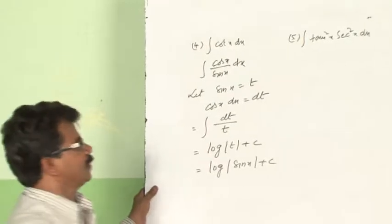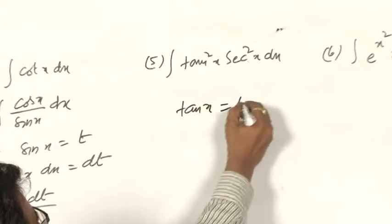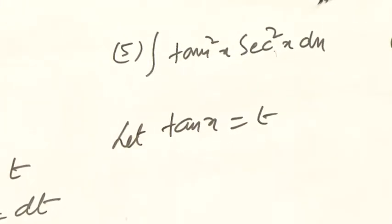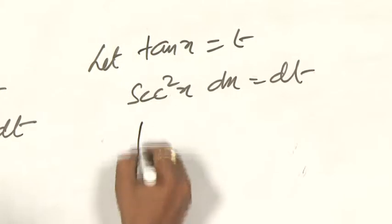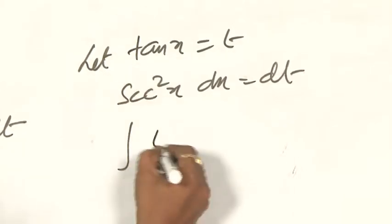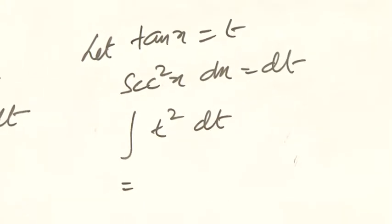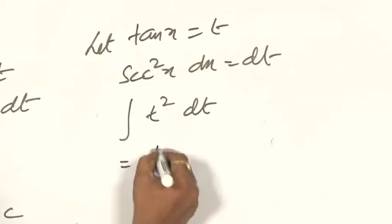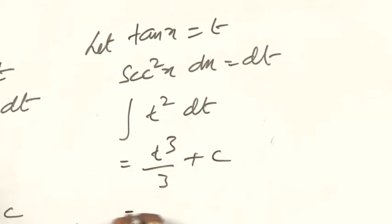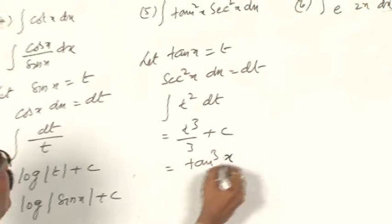Integral of tan²(x)·sec²(x) dx. Let us assume tan(x) = t. The derivative of tan(x) is sec²(x) dx = dt. If you substitute, integral of tan²(x) can be written as t², and sec²(x) dx can be written as dt. Integral of t² dt is t³/3 + c. Now substitute t as tan(x). Therefore, the answer is tan³(x)/3 + c.